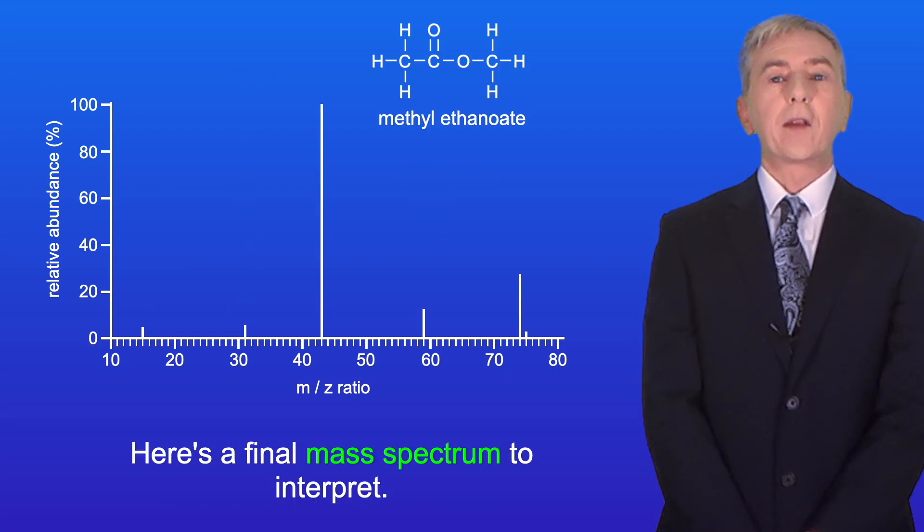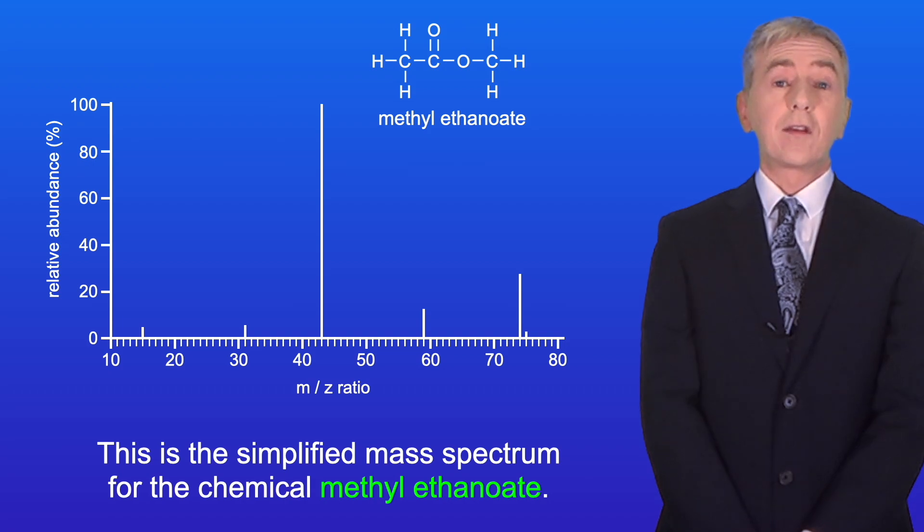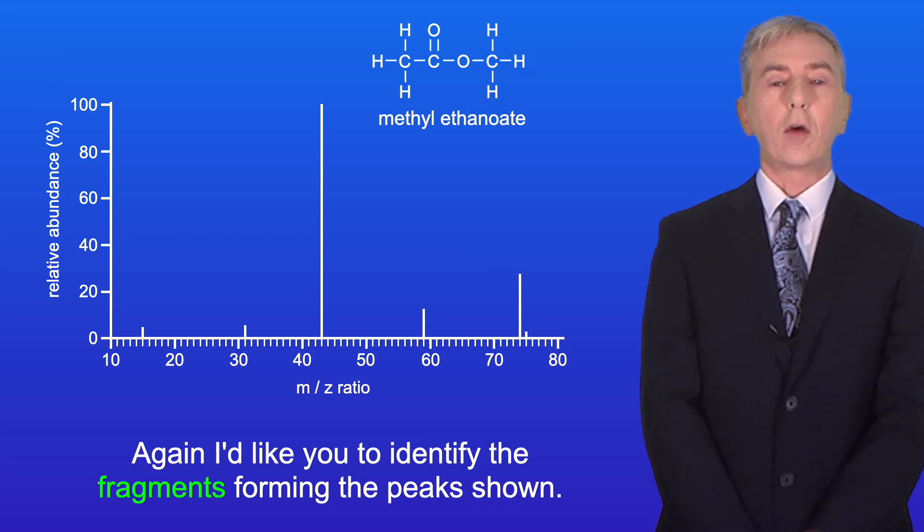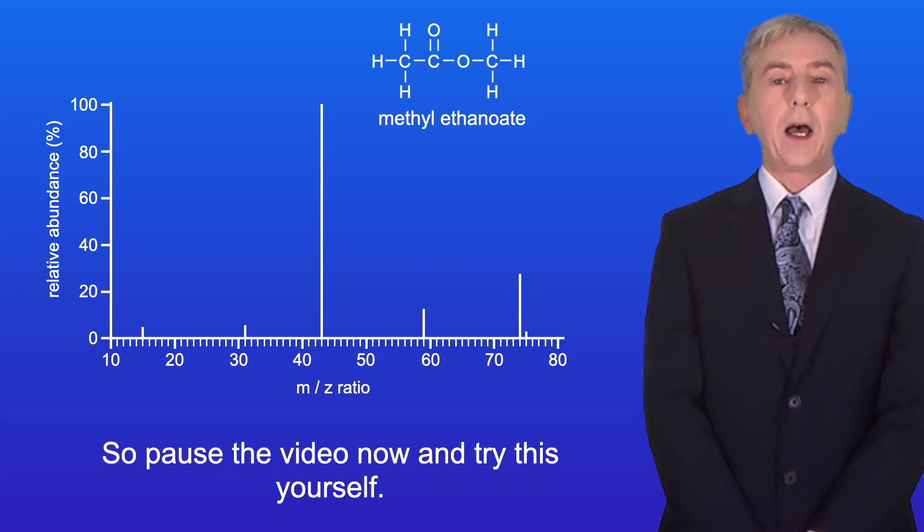Okay here's a final mass spectrum to interpret. This is the simplified mass spectrum for the chemical methyl ethanoate. Again I'd like you to identify the fragments forming the peaks shown. So pause the video now and try this yourself.